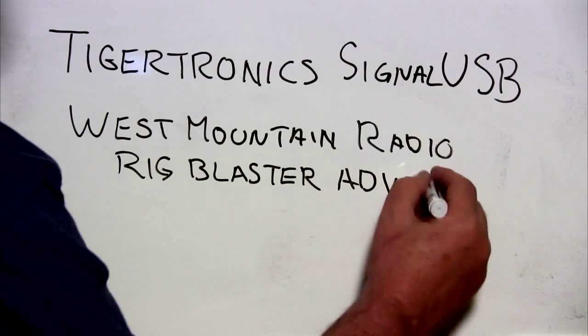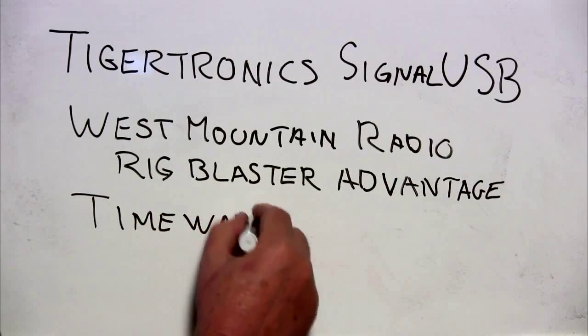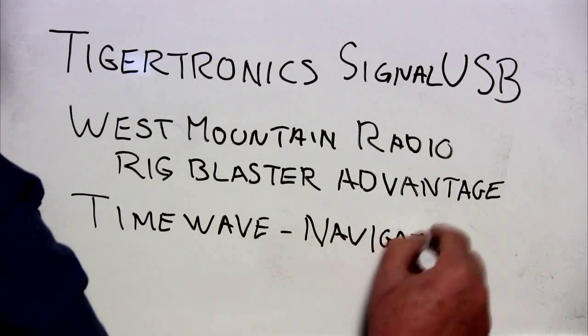These boxes typically have audio level controls and LED status indicators on the front. Examples of these are, again, from Tigertronics, their Signal Link USB. West Mountain Radio with their Rig Blaster Advantage. Time Wave with their Navigator. And there's others available.